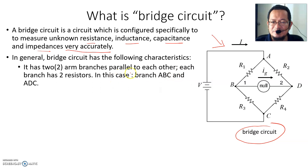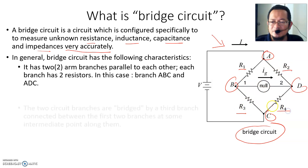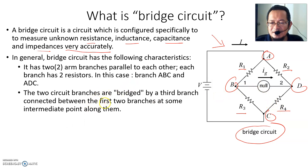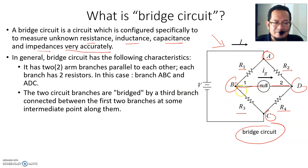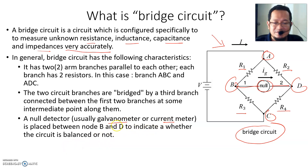The bridge circuit has the following characteristics: it has two arm branches parallel to each other, and each branch has two resistors. For branch A-B-C you have R1 and R3, and for branch A-D-C you have R2 and R4. A third branch exists between nodes B and D, where we insert a null detector — either a galvanometer or galvanometer — to indicate whether the bridge is balanced.